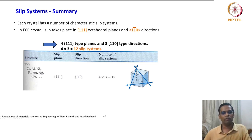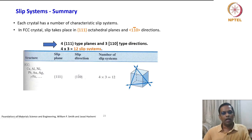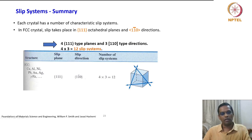We have 4 types of {111} planes and 3 ⟨110⟩ directions, giving 4 times 3 equals 12 slip systems. Examples include copper, nickel, aluminium, lead, gold, silver, and gamma iron — they all belong to this FCC crystal system.